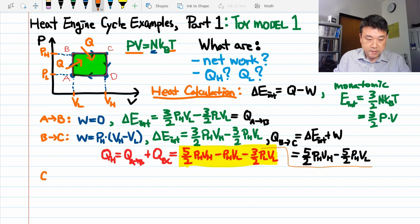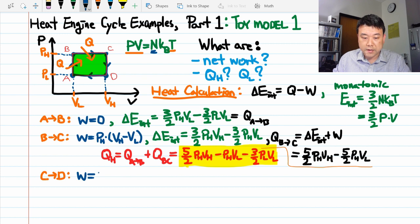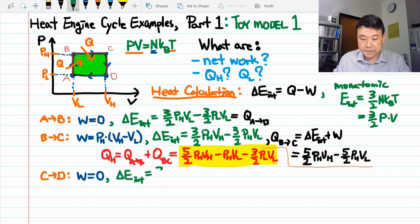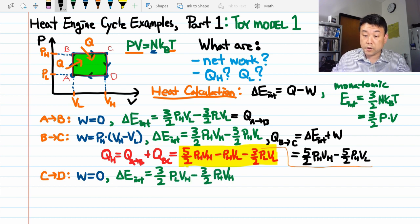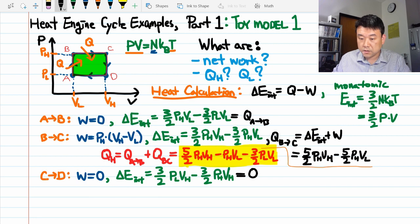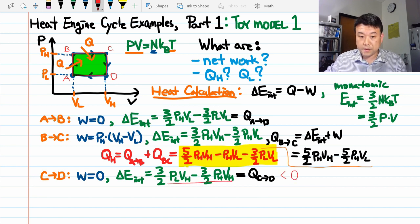Let's keep going. Process C to D. Again, work done is zero. It's an isochoric process, no change in volume. For the change of internal energy, it's the same deal. Three halves times the difference in pressure times volume. And since work done is zero, this is going to be equal to the heat exchange from C to D. Now, I don't want you to miss it. I want you to see that when you stare at this expression, this is going to be negative. So heat flows out of the system in the process of C to D.